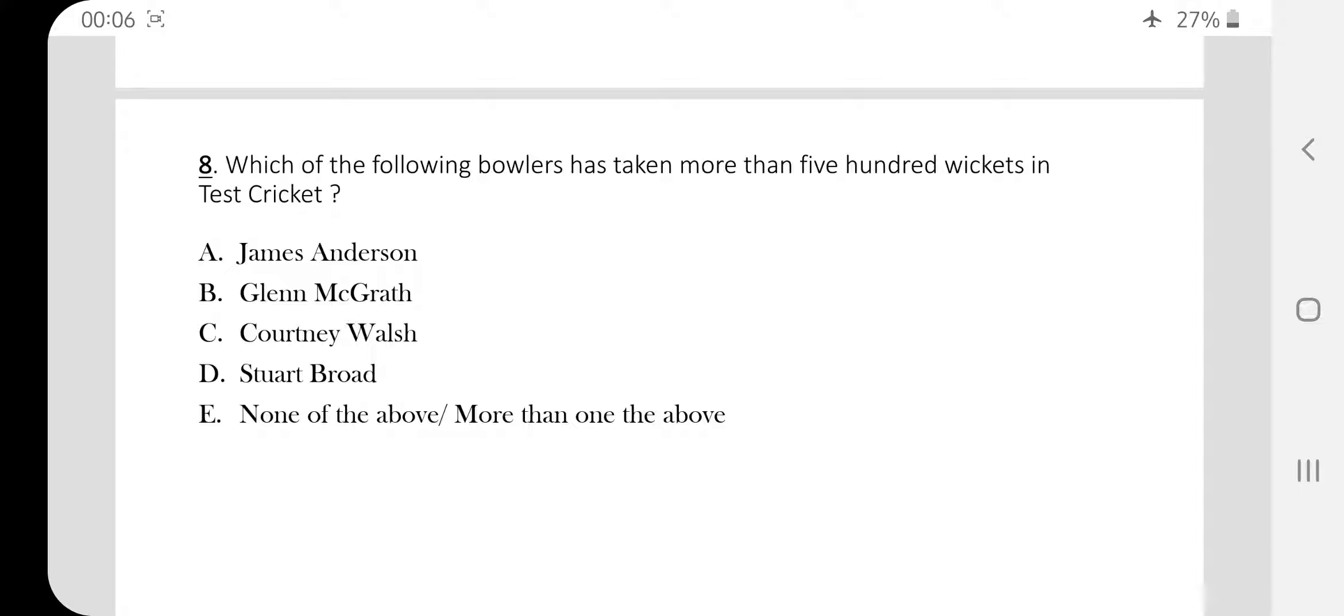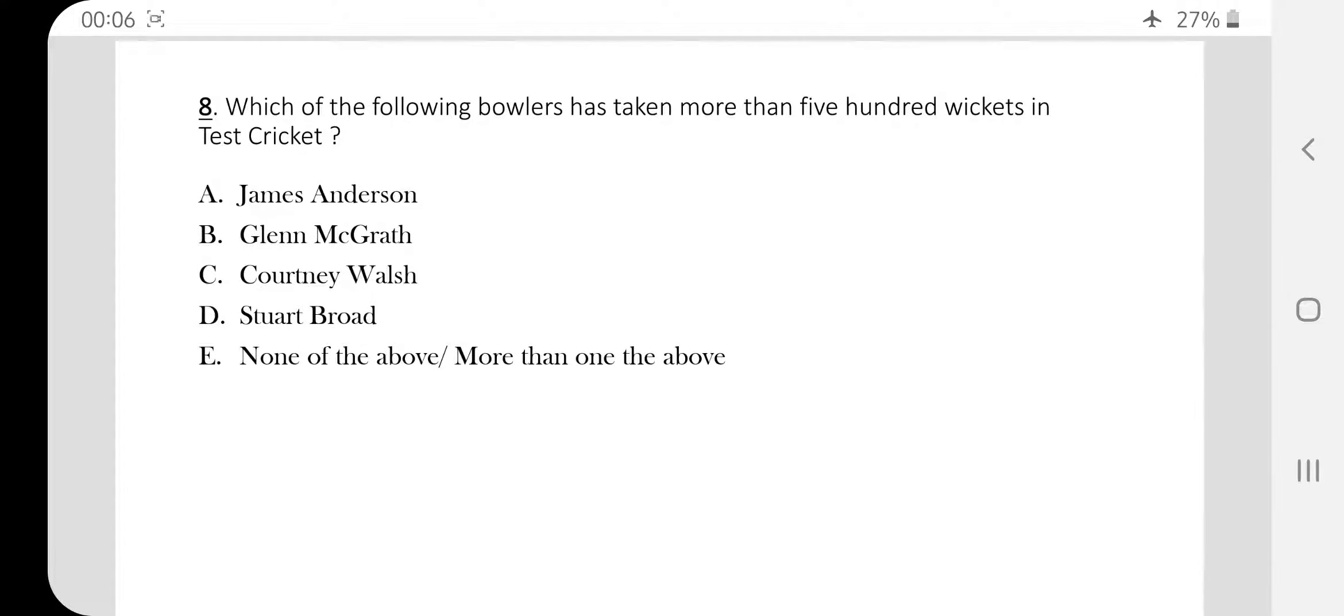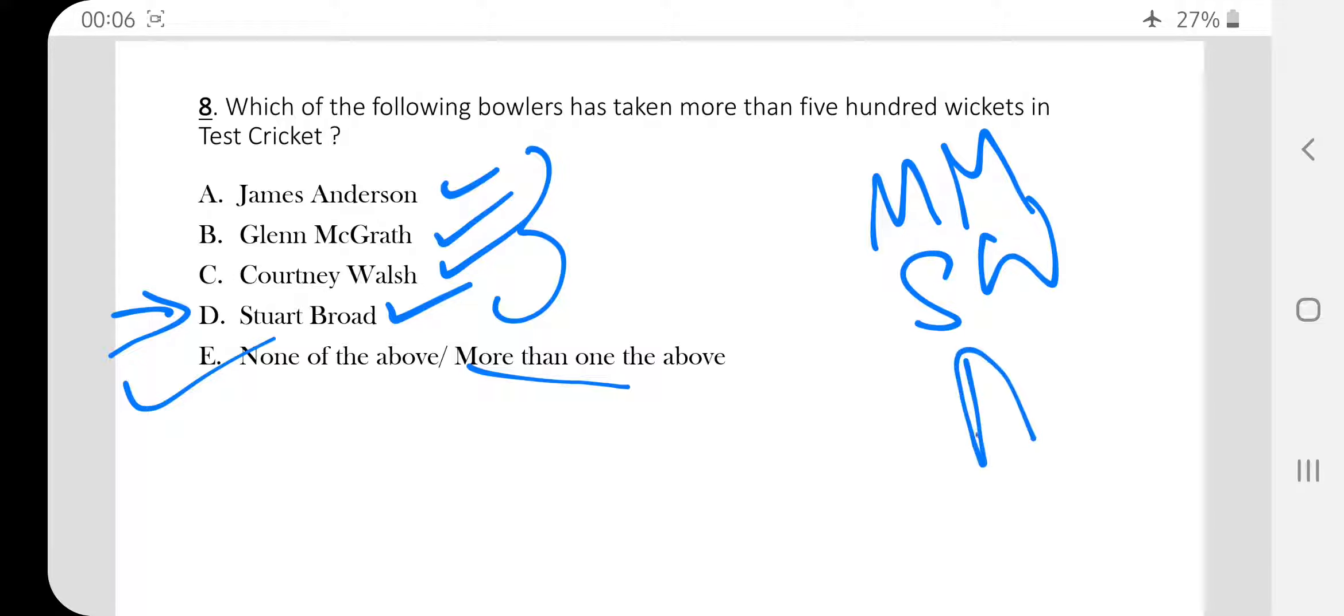Question number eight. Which of the following bowlers has taken more than 500 wickets in test cricket? James Anderson has taken it. McGrath, yes. Courtney Walsh, yes. Stuart Broad, yes. More than one of the above, option E would be right answer. Stuart Broad is the latest to enter this club. Apart from these four, there is Muttiah Muralitharan from Sri Lanka. He is the highest wicket taker in tests currently. Apart from him Shane Warne from Australia and our country's Anil Kumble. These three have also taken more than 500 wickets. So total seven bowlers have taken more than 500 wickets in test cricket.